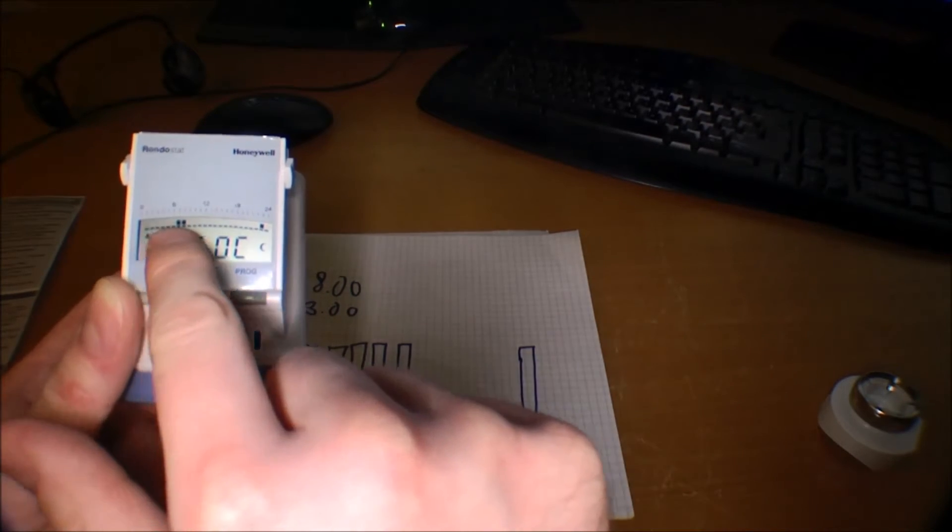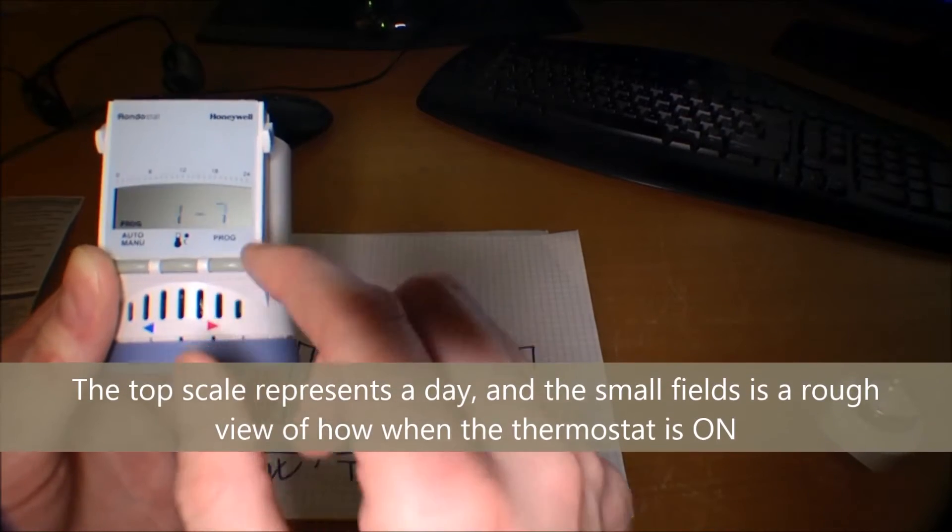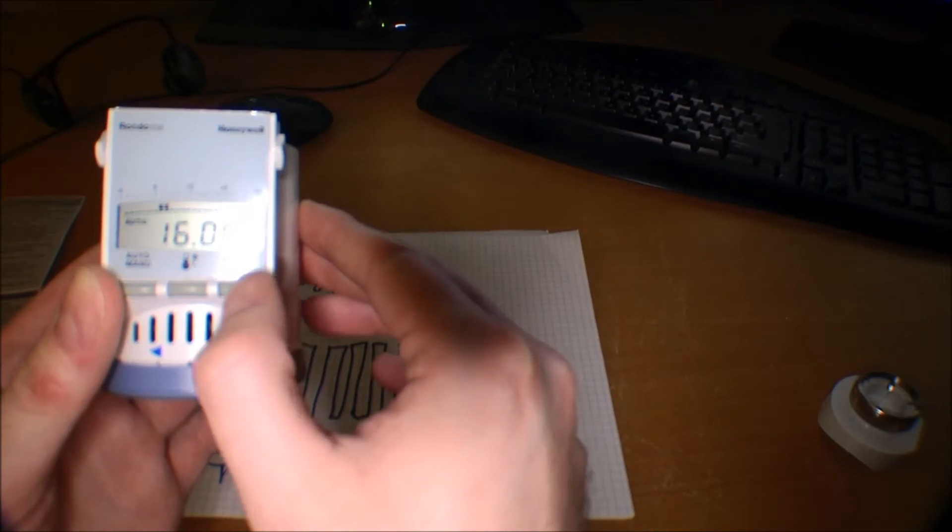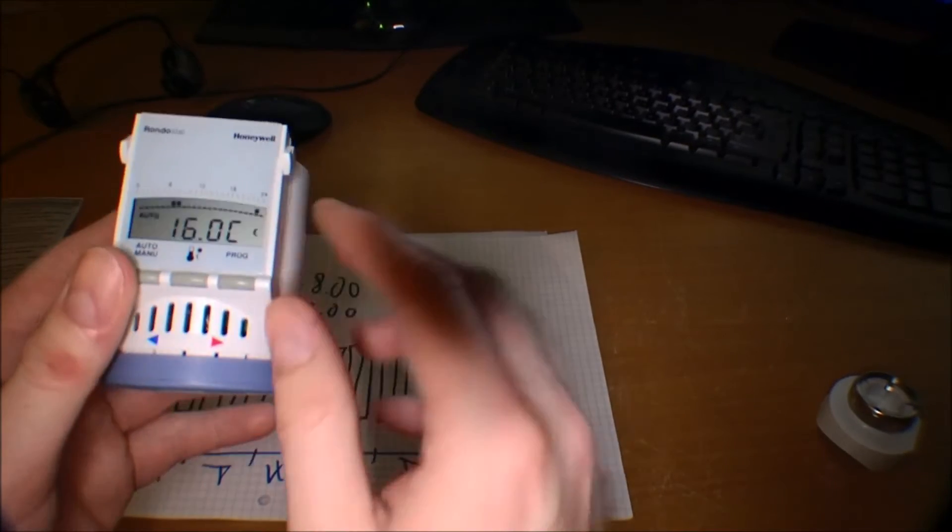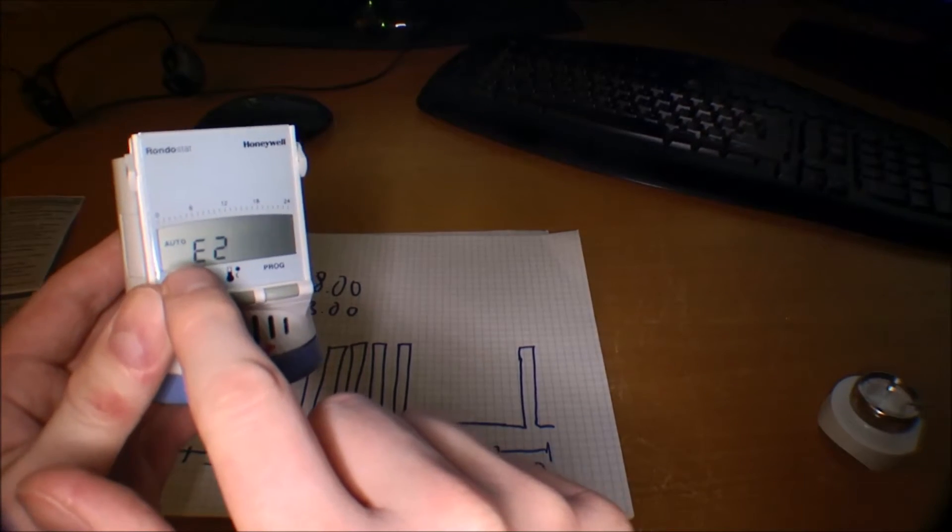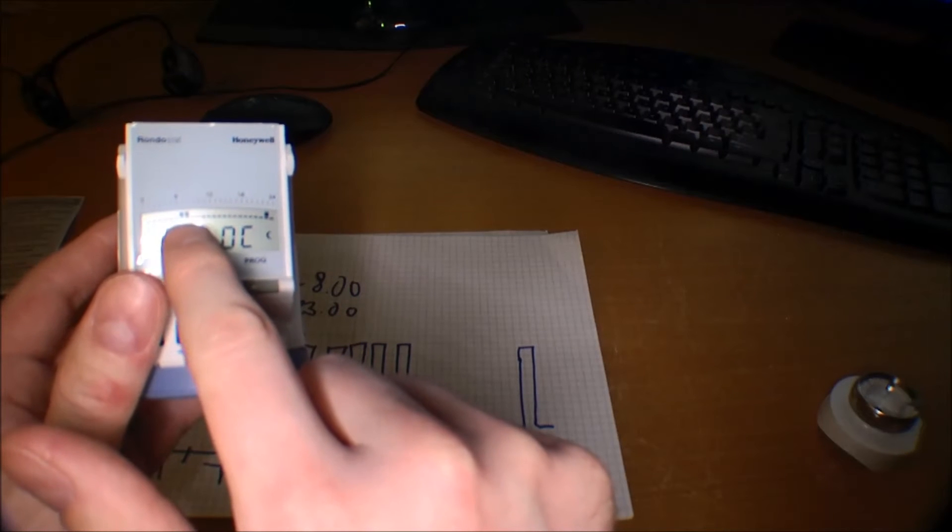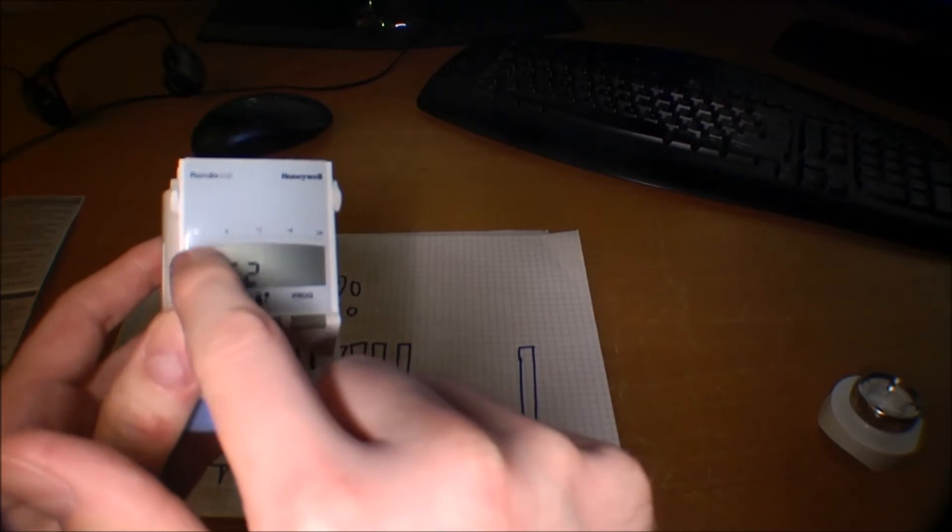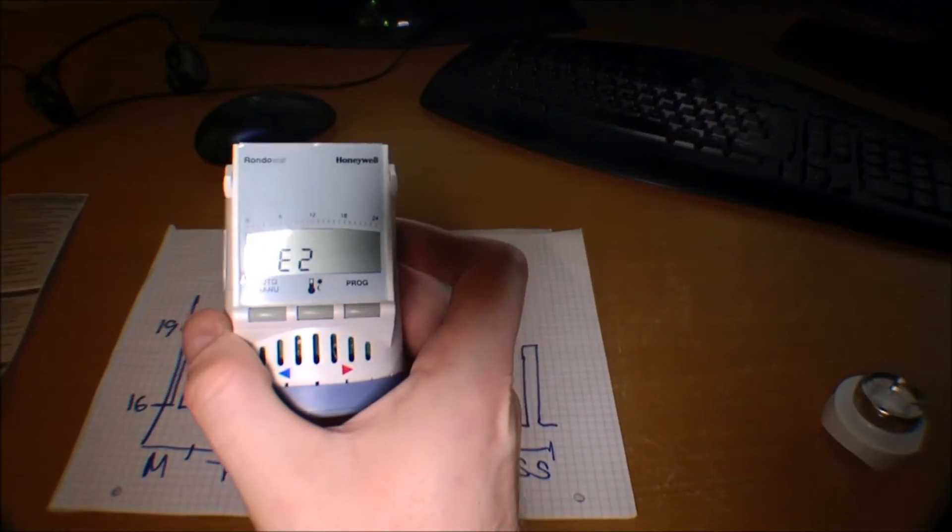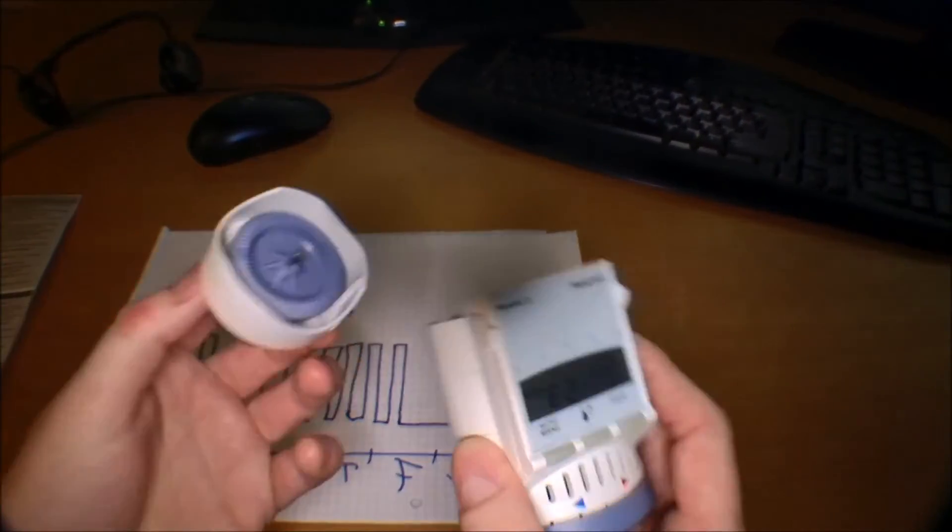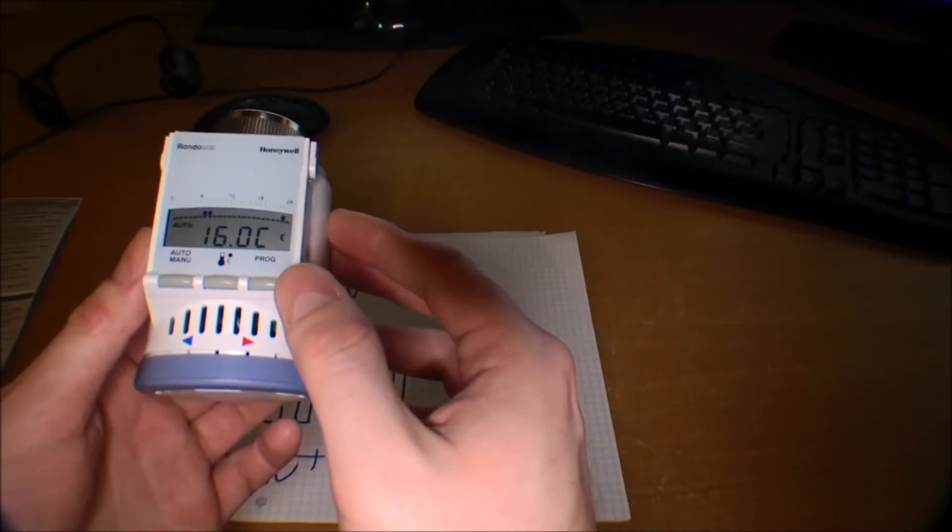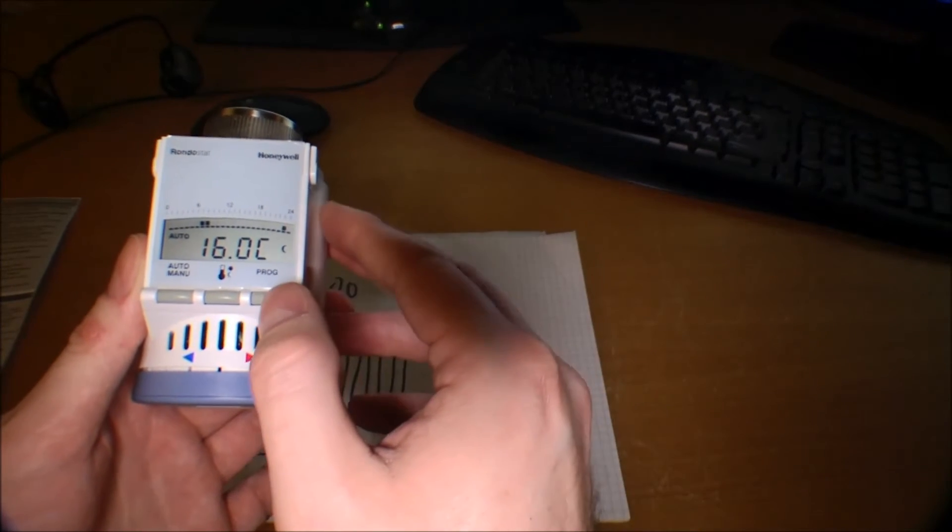And then we have the option of turning it on and off at another time. So we're going to put it to 22. There we are. And turn it off again at 23. Now you can see it shows you up here when the radiator is going to be heated.